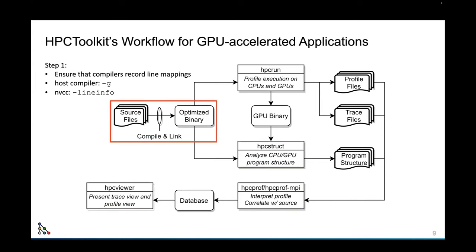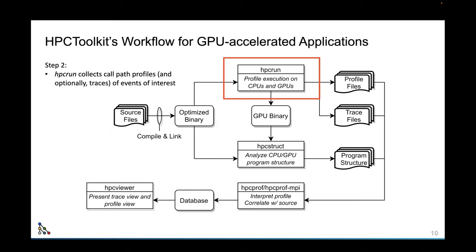When you compile your applications, you use your normal make files, CMake, or whatever. The one thing you want to make sure is that you add dash-G as an option on the CPU compiler, and also add dash-line-info for NVCC to get line information on the GPUs. Those are just two simple edits to your make files. Then HPC Run will profile the execution on CPUs and GPUs, recording profiles of the CPU threads and the GPU streams, and optionally recording trace files that show you the activity on the CPU and GPU.